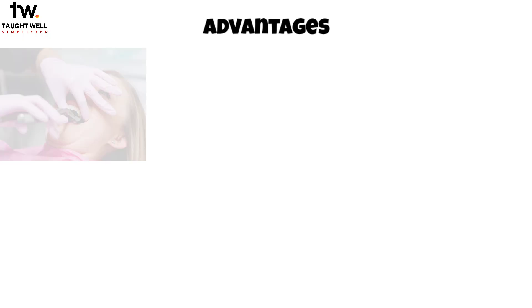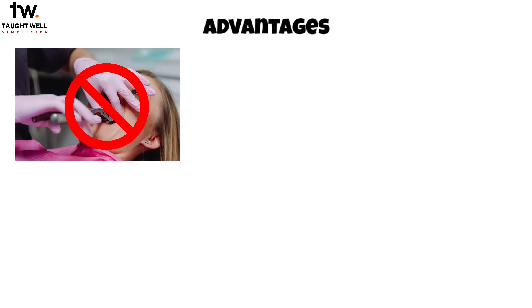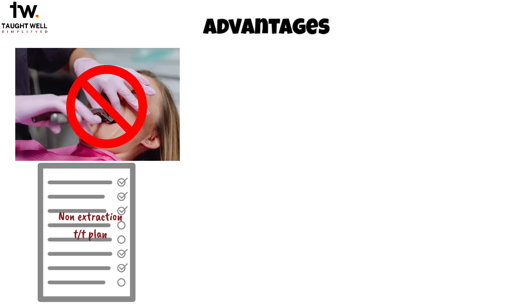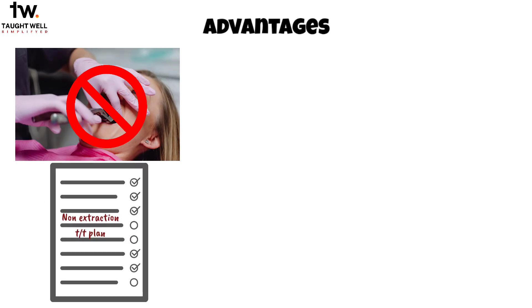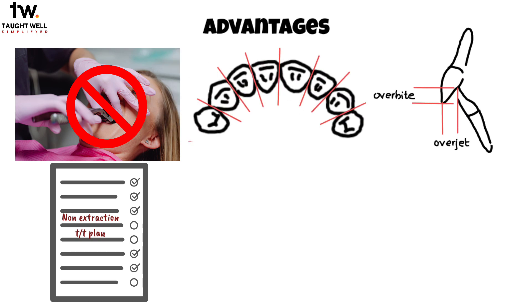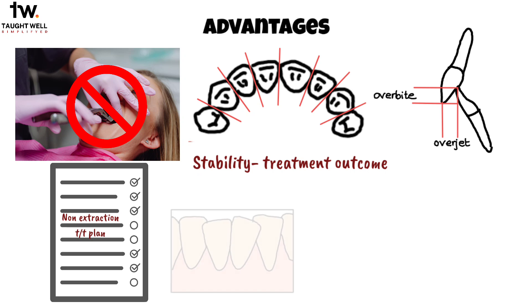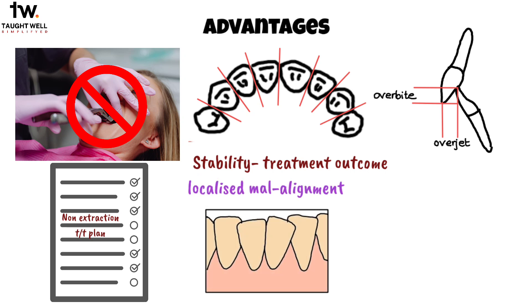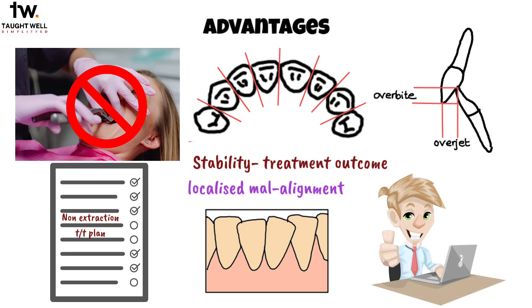Proximal stripping offers several advantages. In cases where minimal space is needed, it can potentially eliminate the need for extractions, providing a non-extraction treatment option. By reducing excess tooth material, it helps improve interdigitation, overbite, and overjet. The broad contacts resulting from proximal stripping contribute to the stability of the treatment outcomes. Additionally, it allows for the correction of localized malalignments without involving a large number of teeth, which is especially beneficial for adult patients.